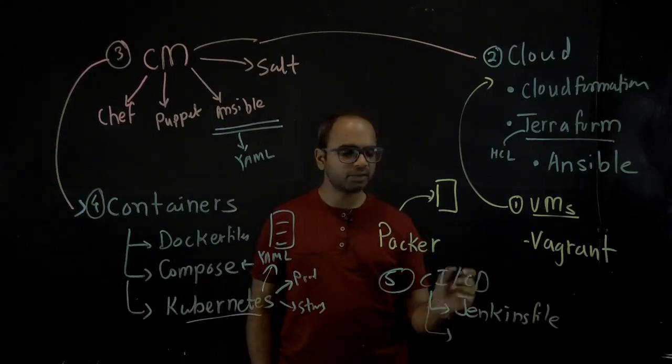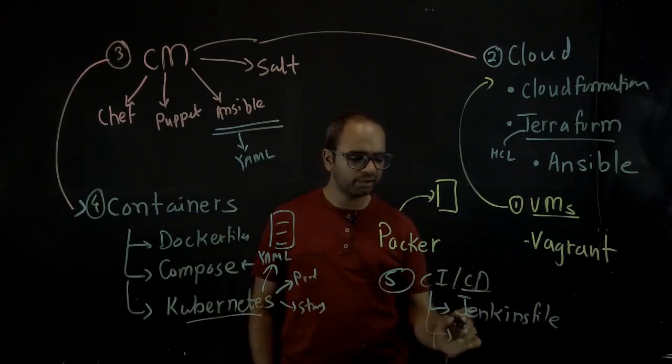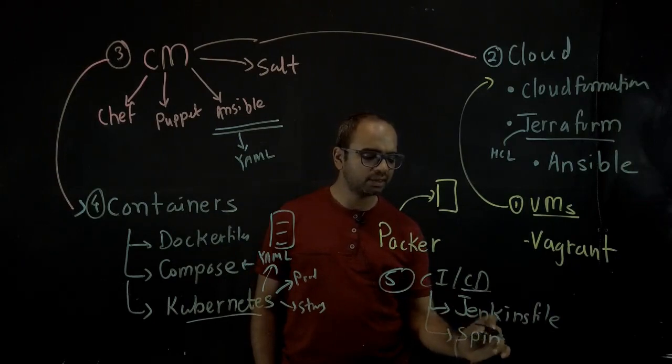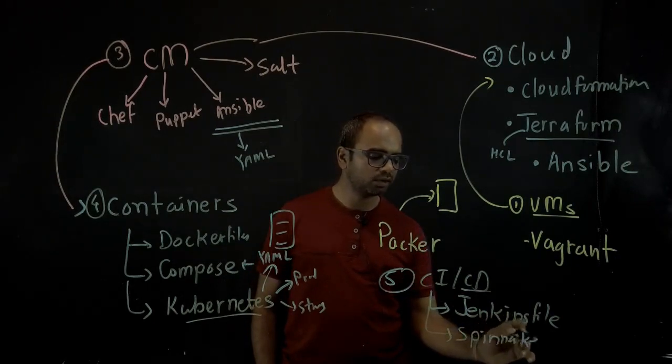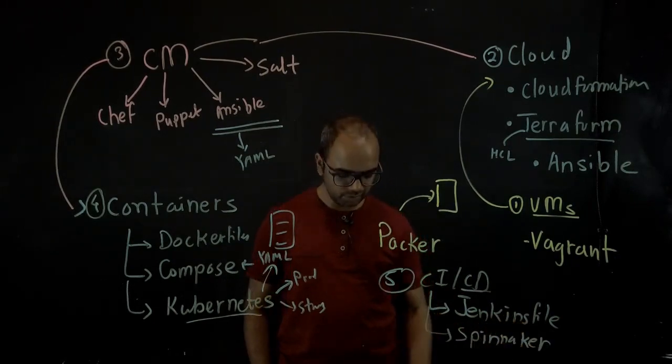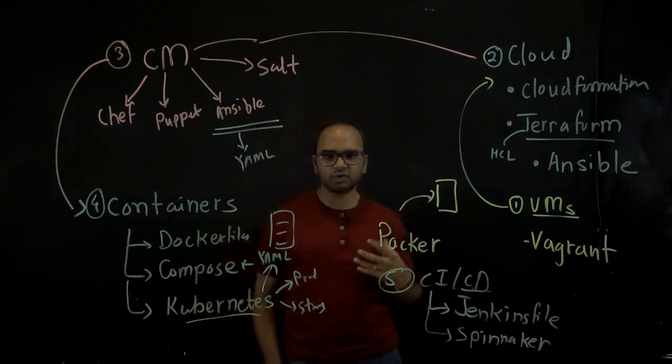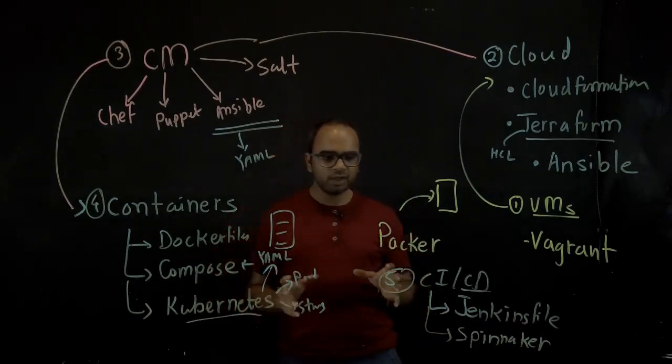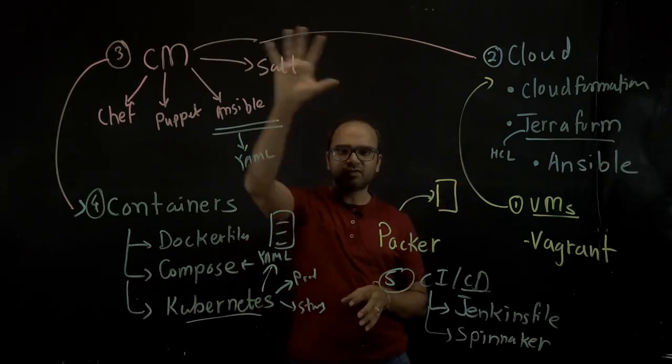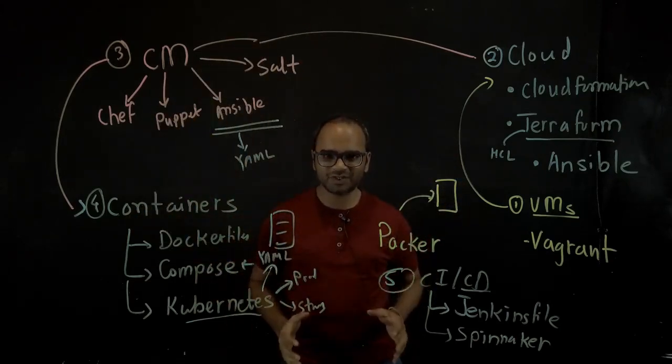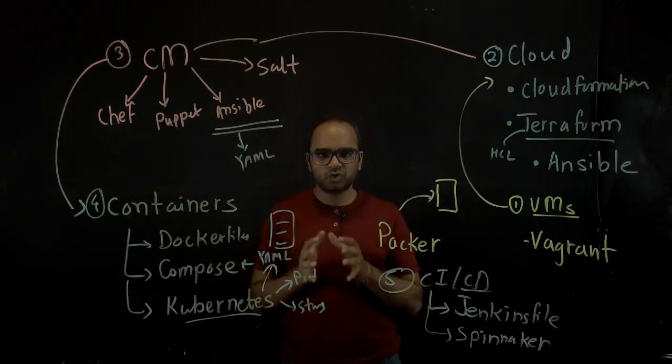Similarly, you can use a deployment tool such as Spinnaker and Spinnaker has its own JSON or YAML specification that you could use to write your code. Now these are roughly five categories of infrastructure as code that you should know about.